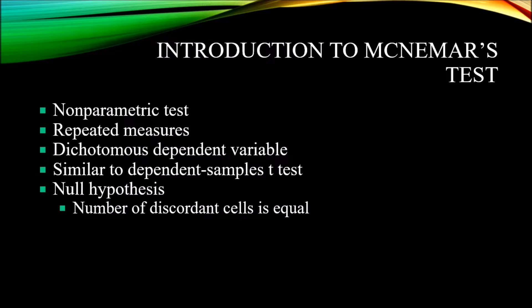With a dependent samples t-test, the dependent variable, or outcome variable, must be measured at the continuous level of measurement, that is, interval or ratio levels of measurement.